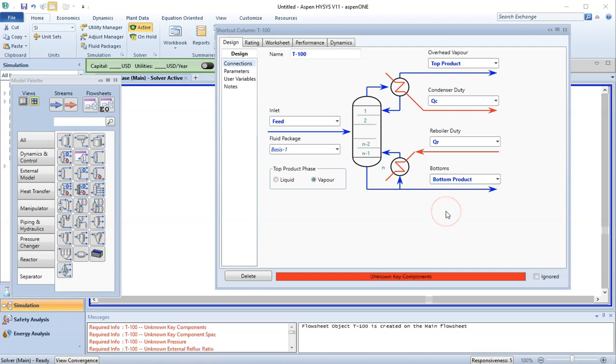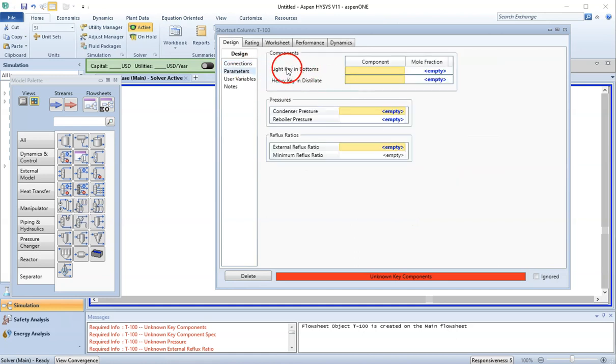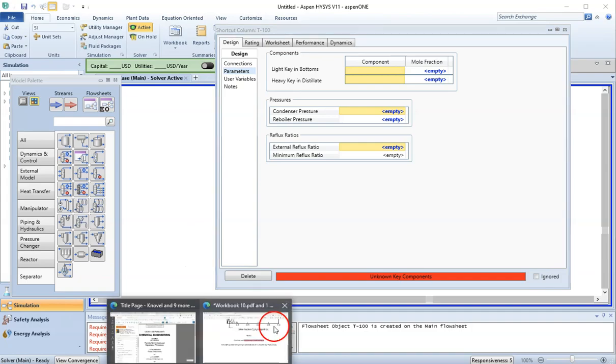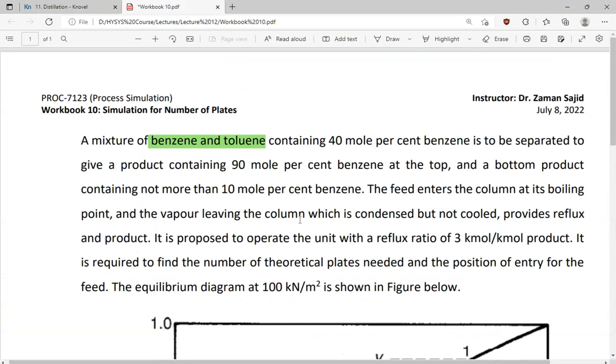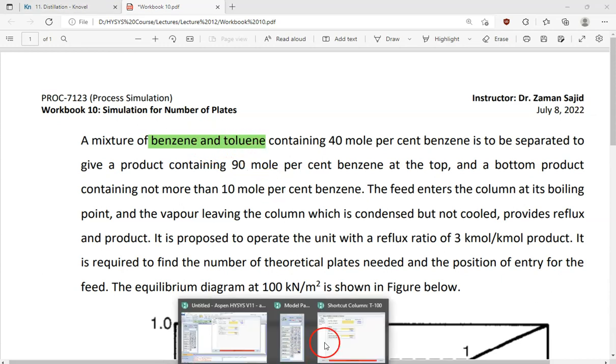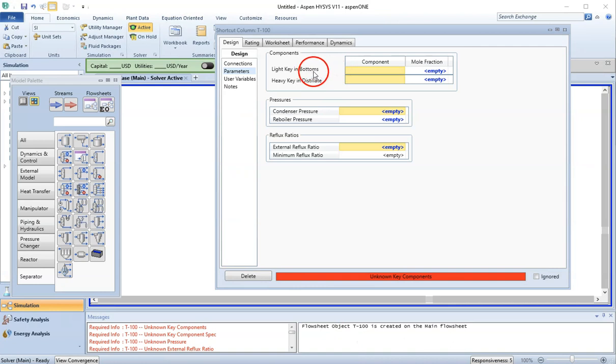Once we have defined our connections, we will go to the parameters. In the parameters, it is saying light key in the bottom. Now we have two components: benzene and toluene. Out of these, the light component is the benzene because it has a lower boiling point than toluene. So the light key in the bottom will be my benzene, and the heavy key in the distillate will be my toluene.